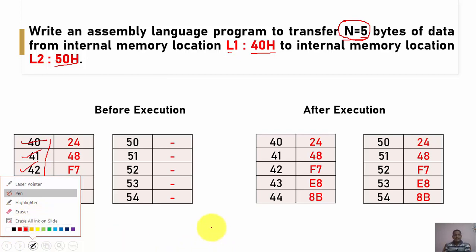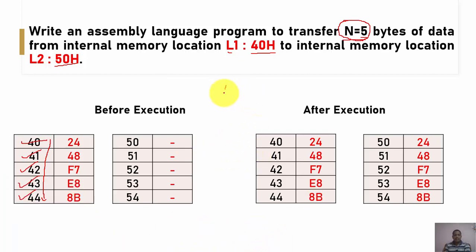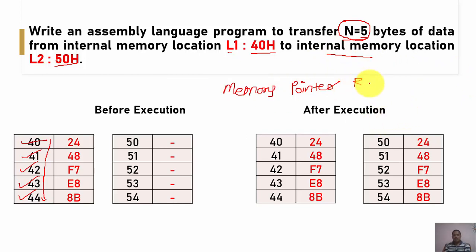In order to execute this program, the basic thing we require is a memory pointer, because we have to access successive memory locations. Since this is internal memory, we are supposed to use memory pointers R0 and R1 as internal memory pointers.